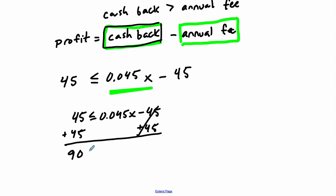And then these cancel. And 45 plus 45 is $90, 0.045 times something. And let's solve this. Let's divide both sides by 0.045. And this will give us our answer.